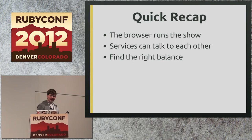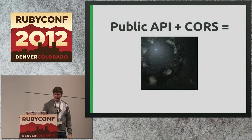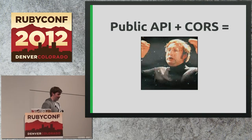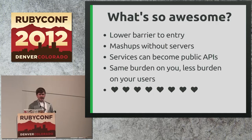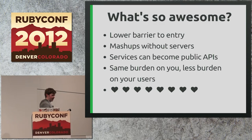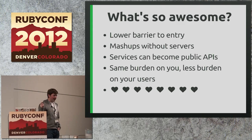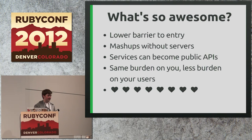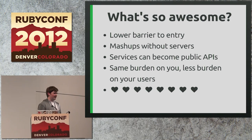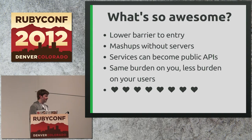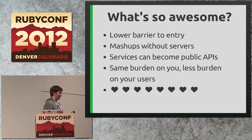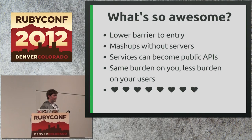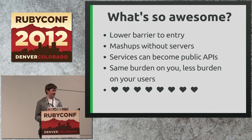Let's talk about public APIs that use CORS and why that's awesome. First, it lowers the barrier to entry: if I build an application and allow a public CORS API, the only thing someone needs to build an app that leverages my API is a text editor and a browser — they don't need to run a server, they can do this locally, they can run it from file://. This opens up a whole new ability to build super lightweight apps that do a lot more than you'd expect.